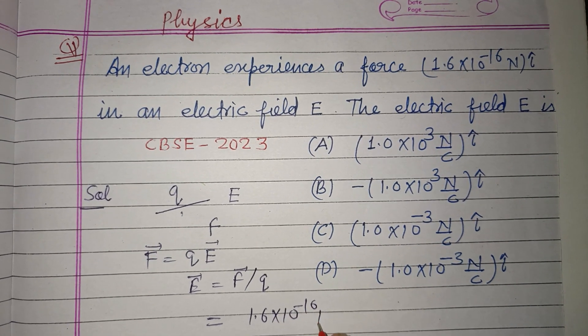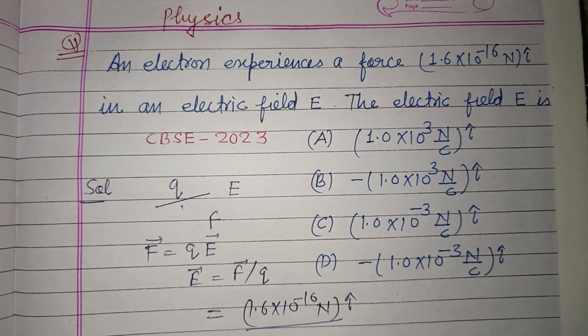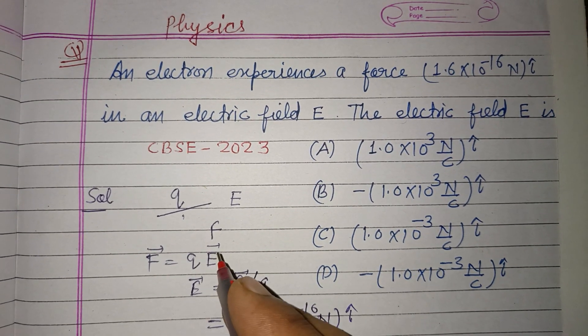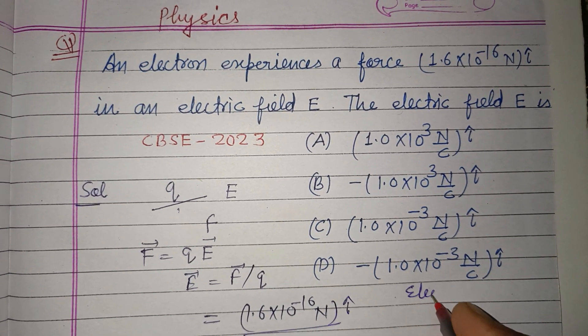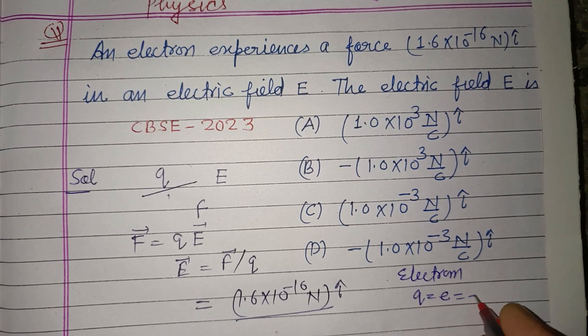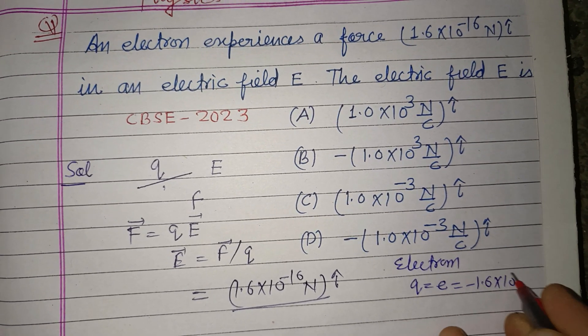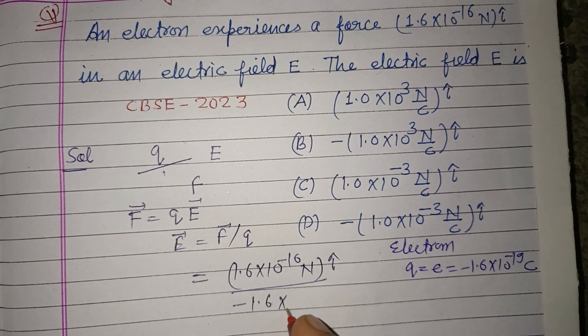Newton î upon Q. Since the charged particle here is an electron, the electron has Q equal to e, which is -1.6×10^-19 coulomb. So dividing this, -1.6×10^-19 coulomb,